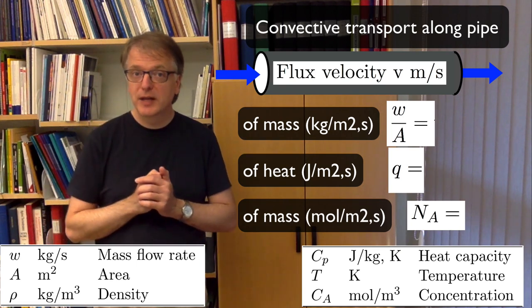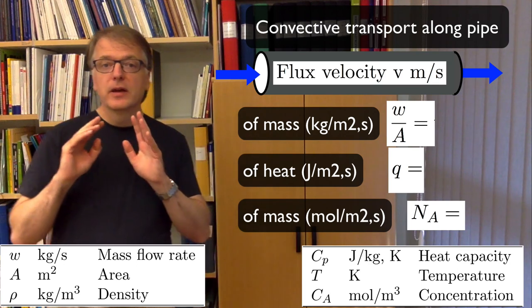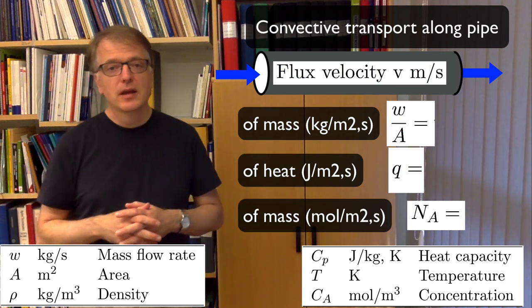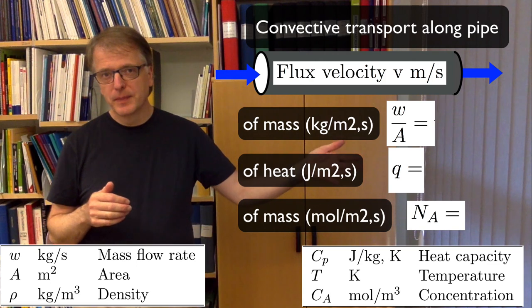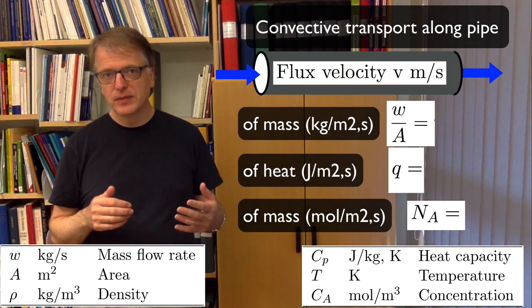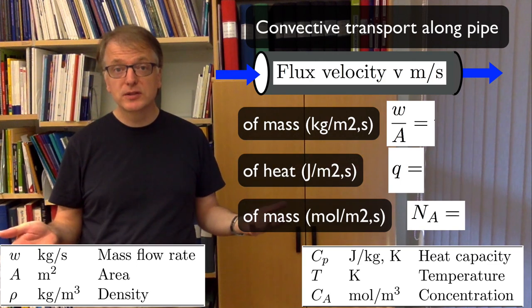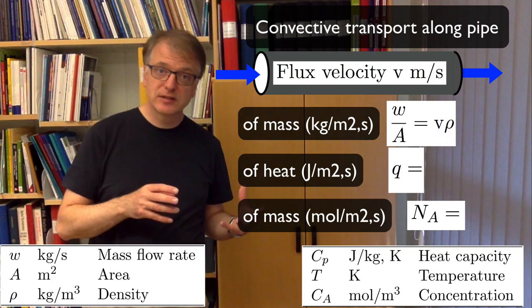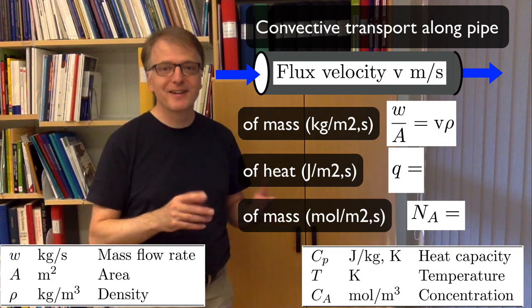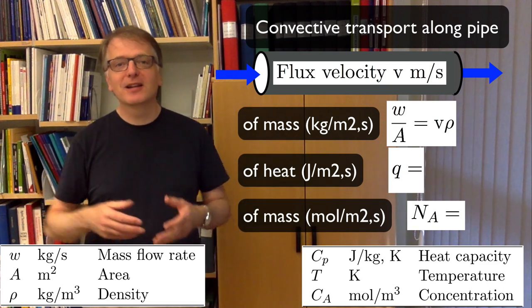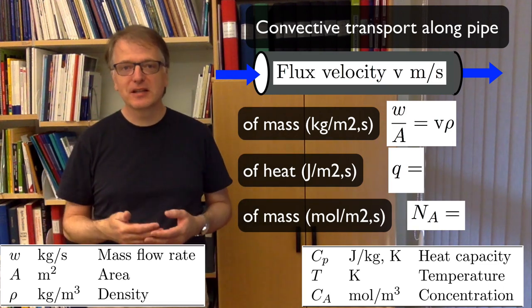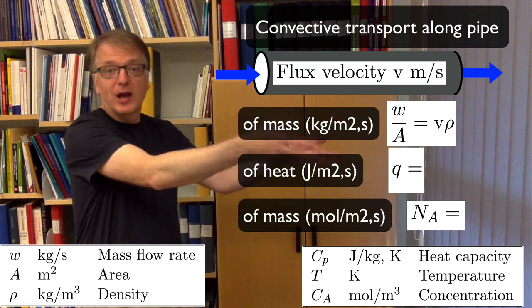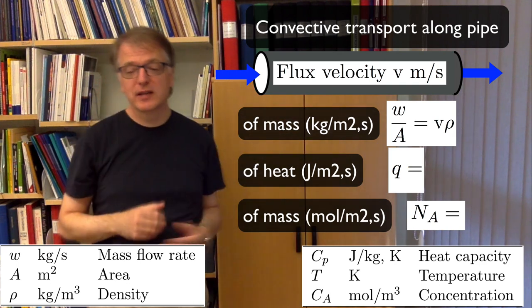Okay, did you manage? The mass transfer: if you know the velocity and you know the density, you only need to multiply the two. The velocity meter per second times the density kilogram per cubic meter becomes automatically kilogram per square meter per second. So that is how many kilograms pour out at the other end.